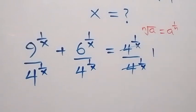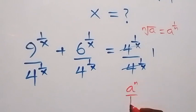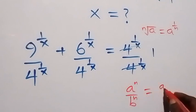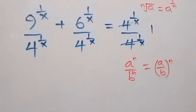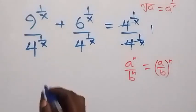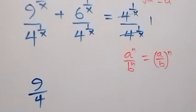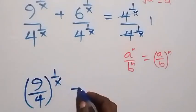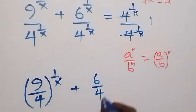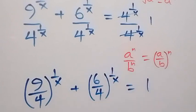When we have a raised to power n over b raised to power n, this is the same as (a over b) raised to power n. So we can write this and it becomes (9 over 4) raised to power 1 over x, plus (6 over 4) raised to power 1 over x, equals 1 on this side.